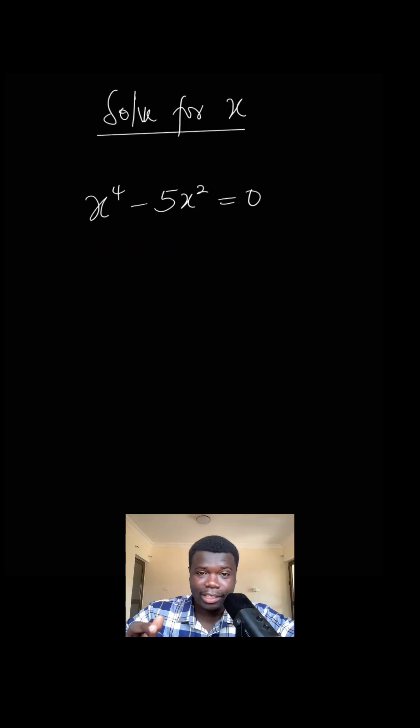This question looks very scary but it's actually simple. We have to solve for the value of x in the equation x^4 - 5x^2 = 0. So how do you do it?